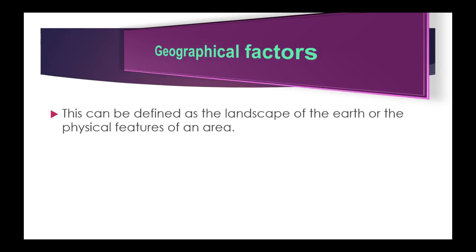Communications that rely on satellite transmissions are sometimes affected by activity on the surface of the sun. During solar storms and similar events, large amounts of solar material like microwave radiation and electromagnetic energy are emitted from the sun. These can overwhelm the signals being transmitted by a satellite, causing what is known as a sun outage or sun fade. That's it for geographical factors.